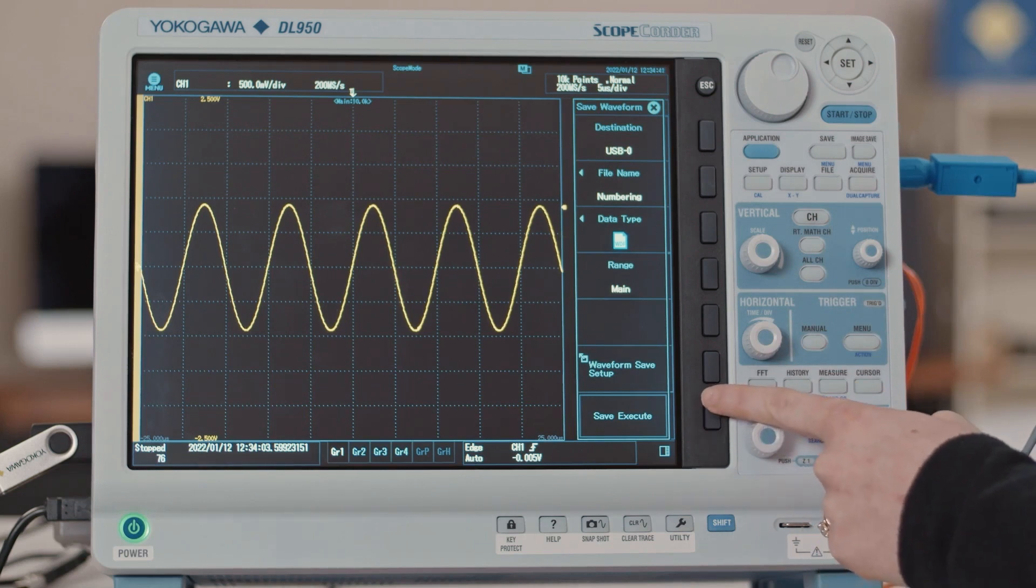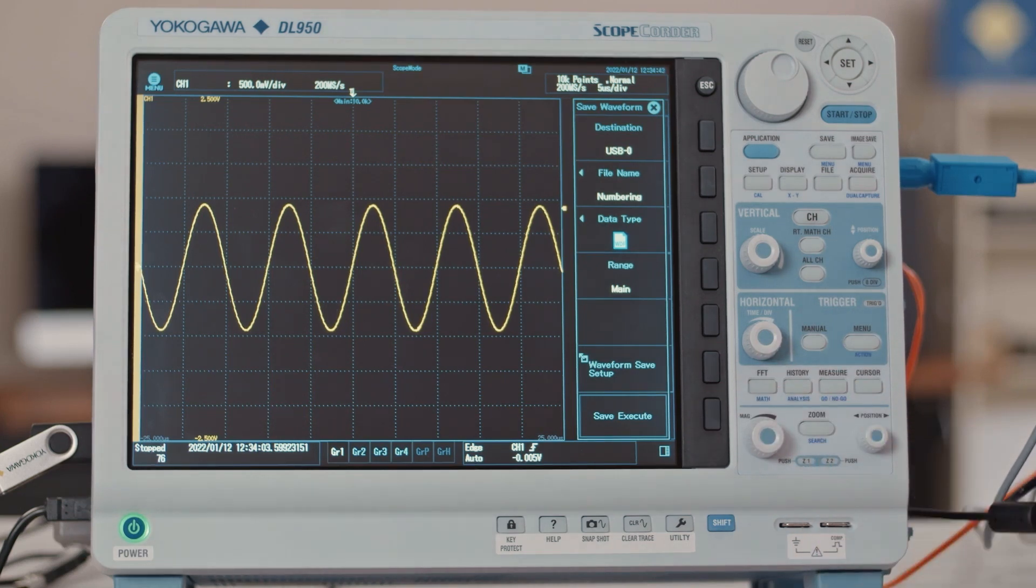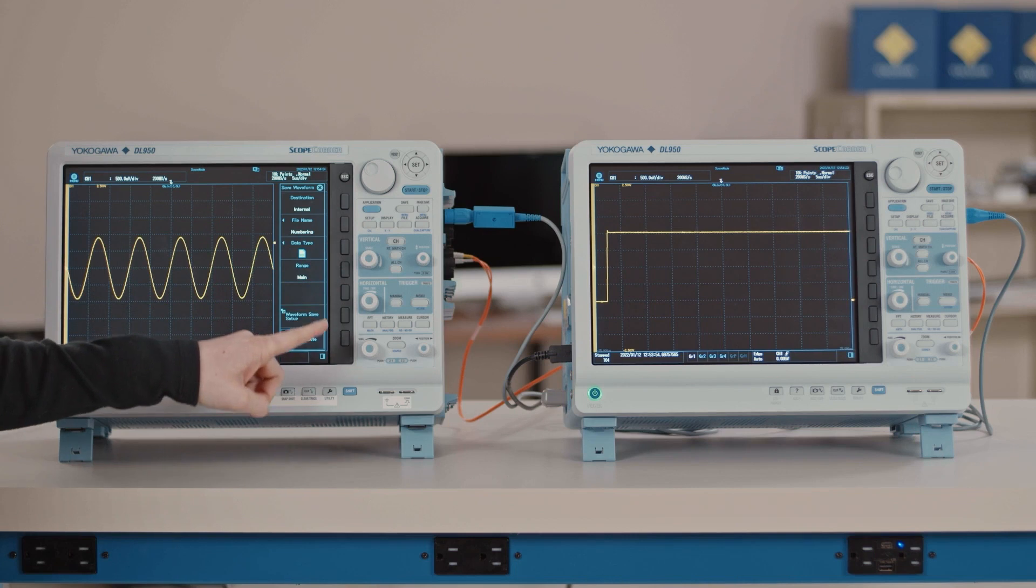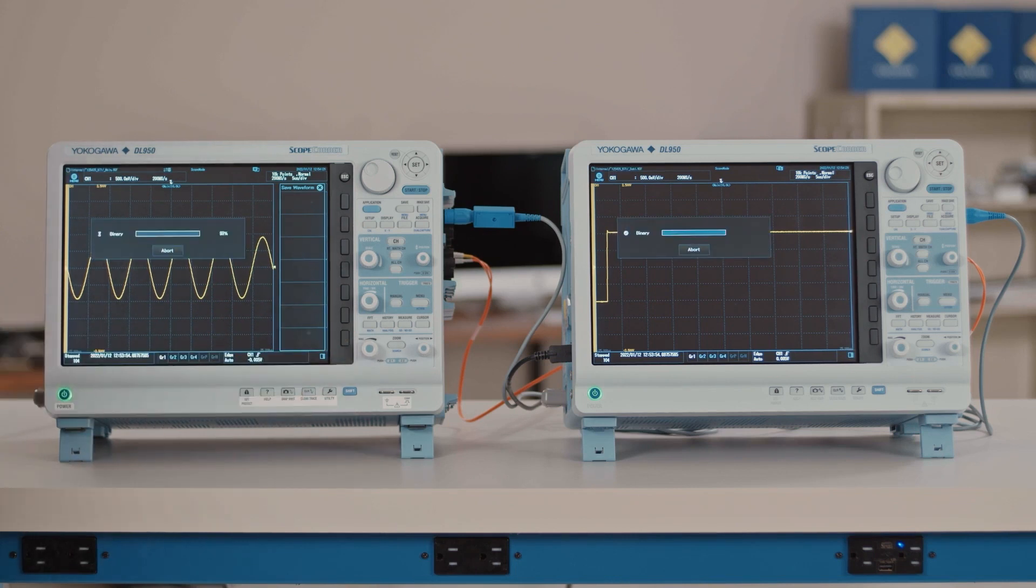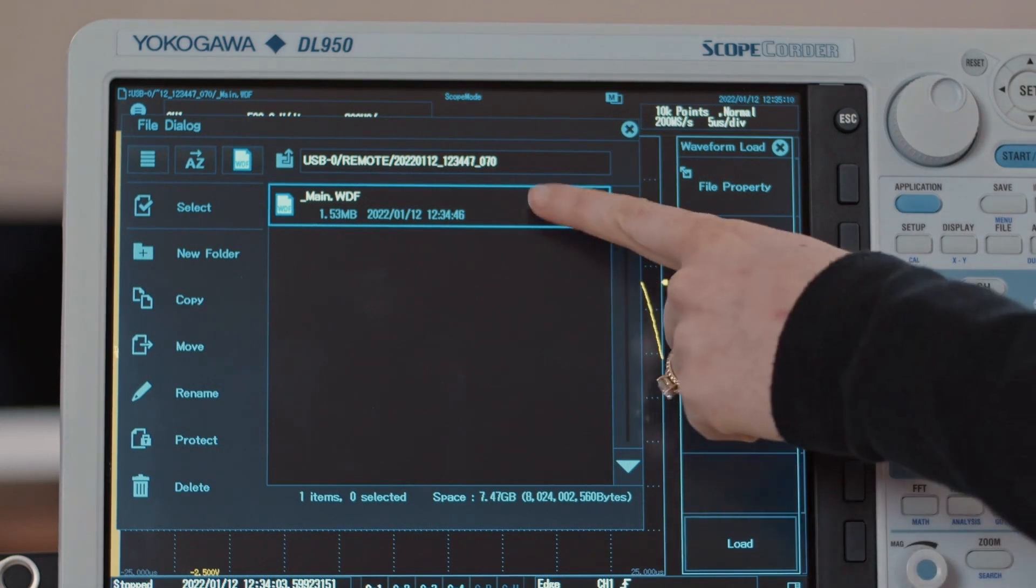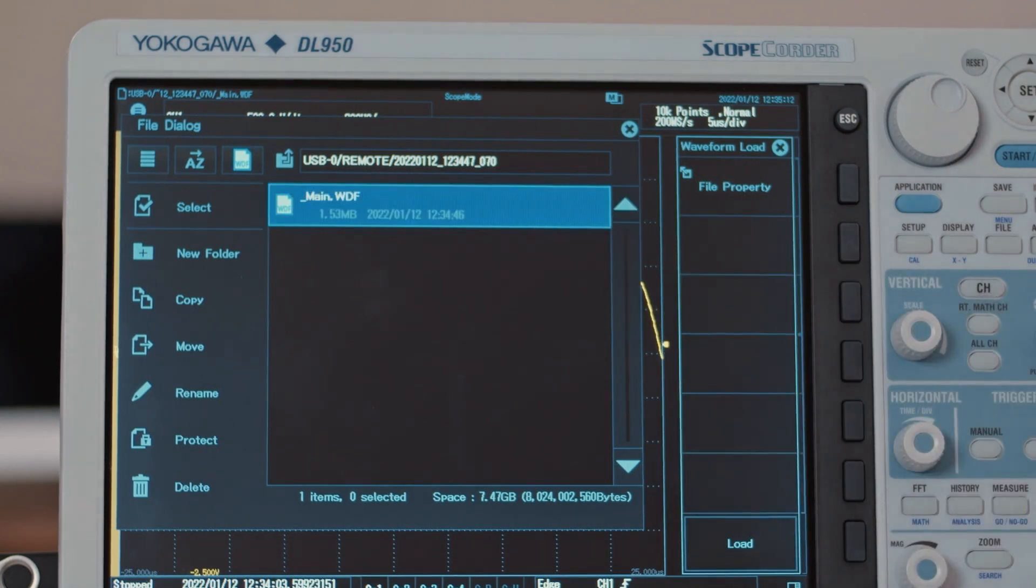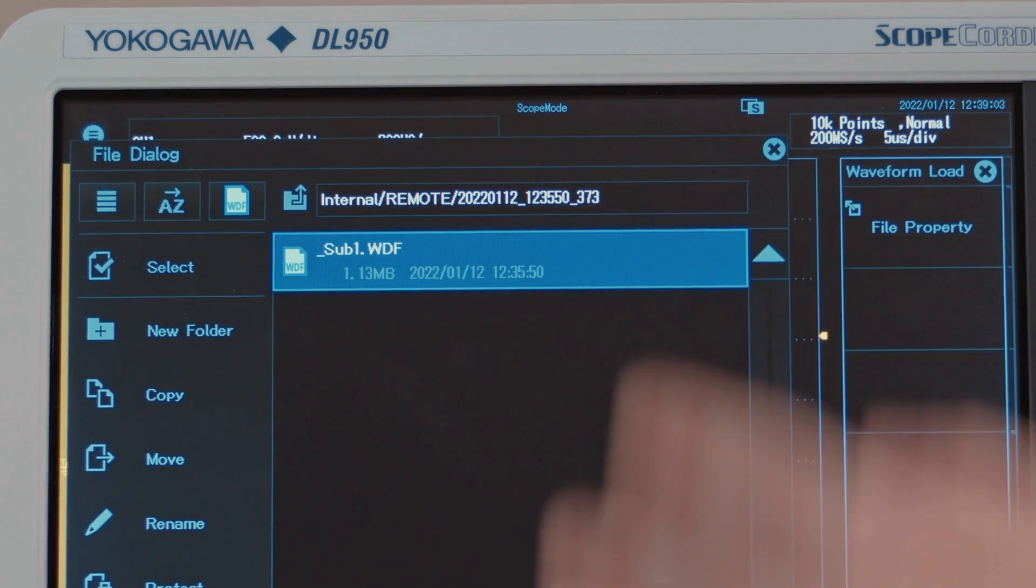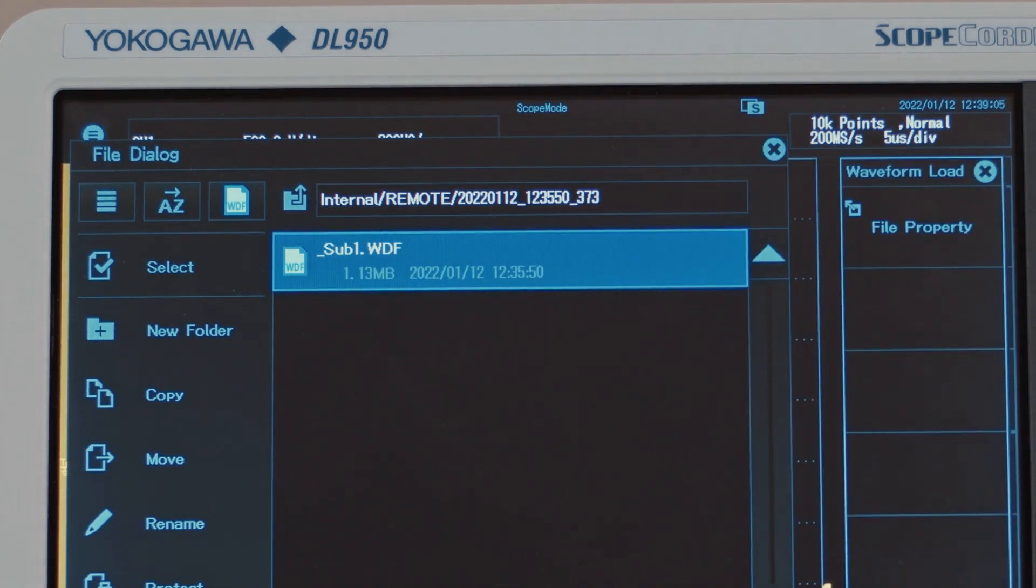The save settings need to be set on each DL950, but when you press Save Execute on the main unit, the subunits will simultaneously save their waveform data. Files are saved in folders automatically named by date and time. The main unit files are saved with an underscore main at the end and subunits are saved with an underscore sub and the number corresponding to which subunit it is.